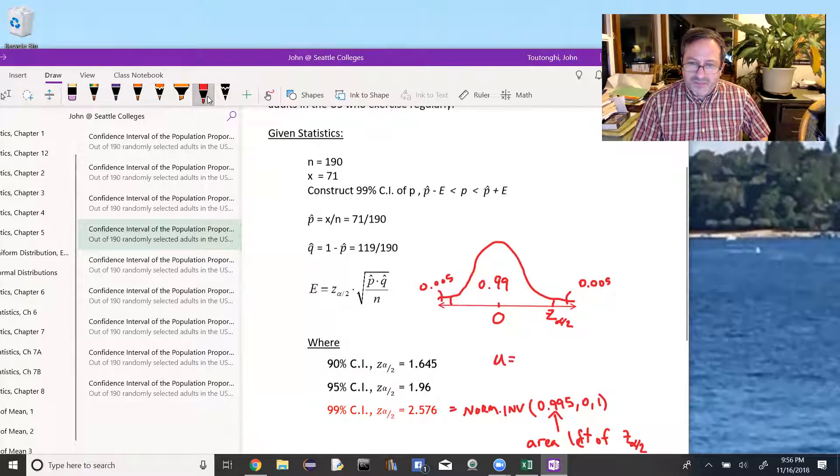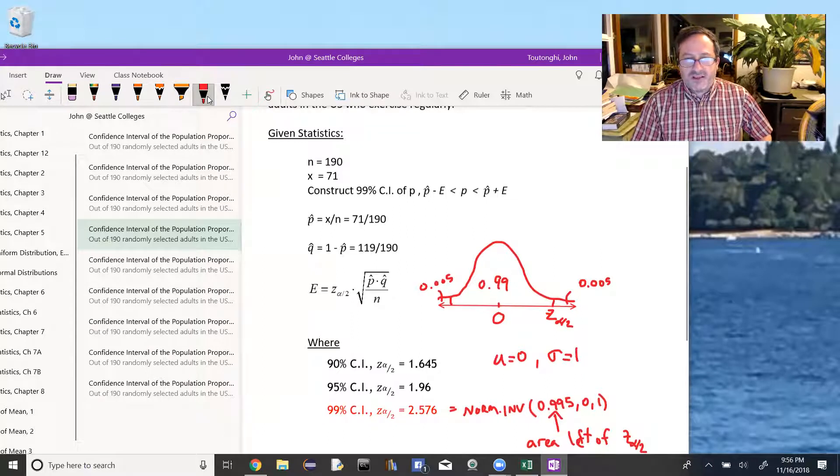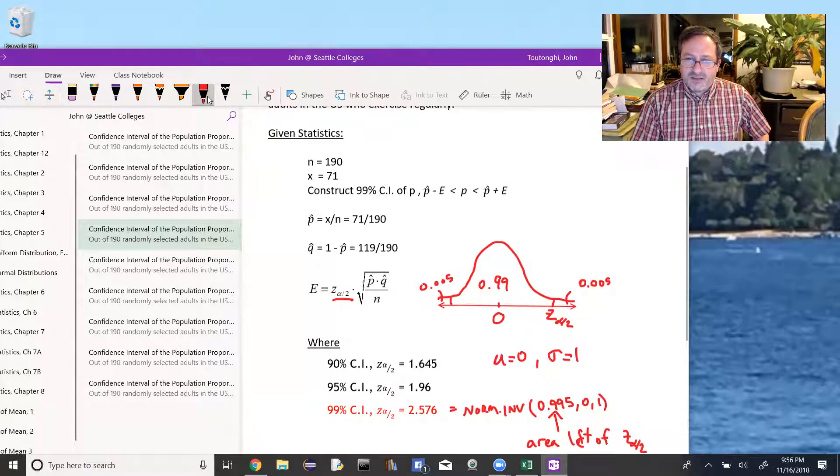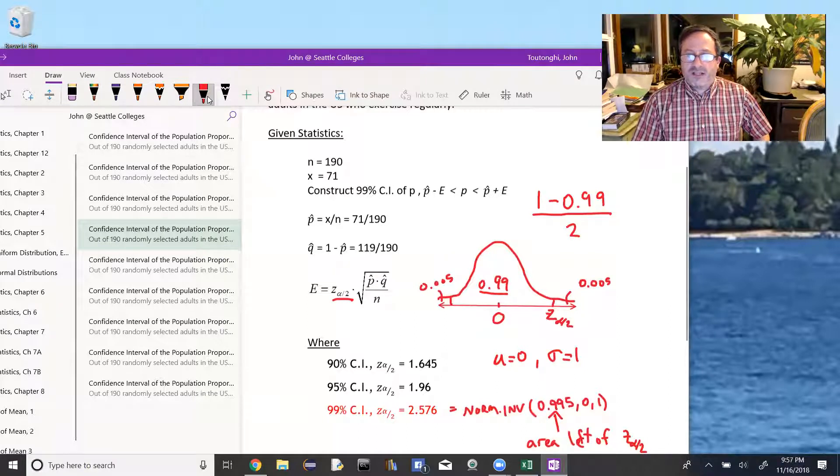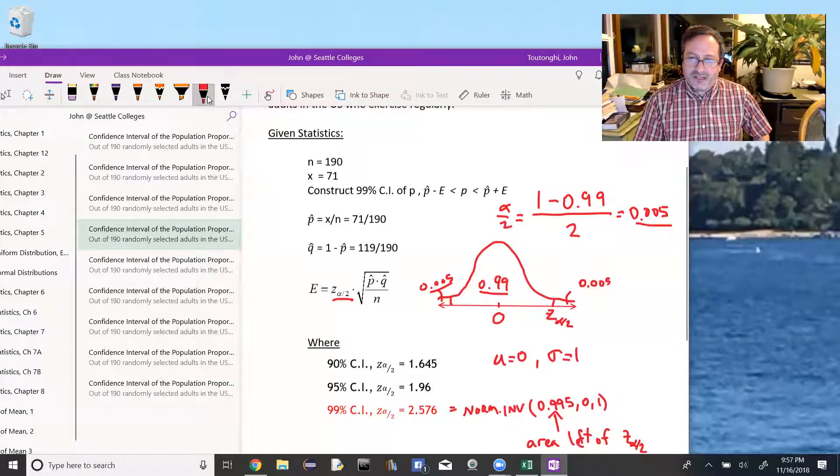When we talk about a standard normal distribution, the mean would be 0 and the standard deviation would be 1. We're going to use this to help us find this error. The z-alpha over 2 is a z-score. It's the z-score such that if we took two tails here, 99% of the data is in the middle, and each tail contains alpha over 2, or 1 minus 0.99 divided by 2. That's the alpha over 2, and that's 0.005.